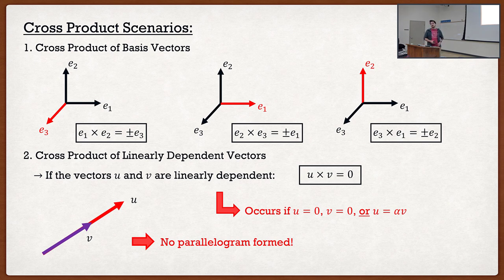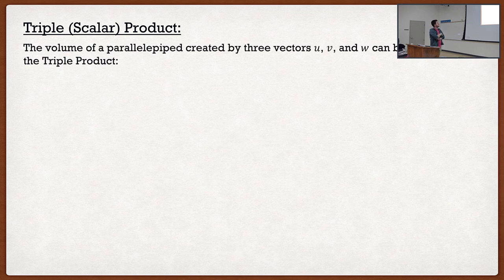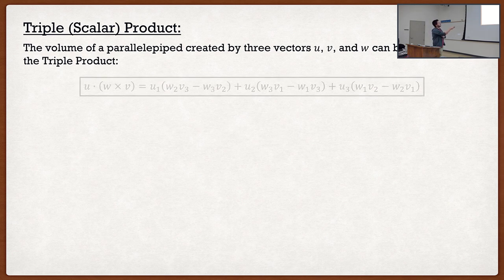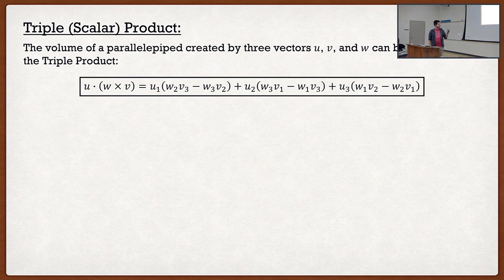Now we'll move on to the triple or scalar product. You guys have seen this before — in N-130 we had i, j, k and the position vector and a determinant. That is basically the triple or scalar product. It's the volume of the parallelepiped created by vectors u, v, and w: take u and dot it with v cross w. If u, v, and w are linearly dependent, this equals zero. If u, v, and w are orthonormal, the cross product equals plus or minus one.